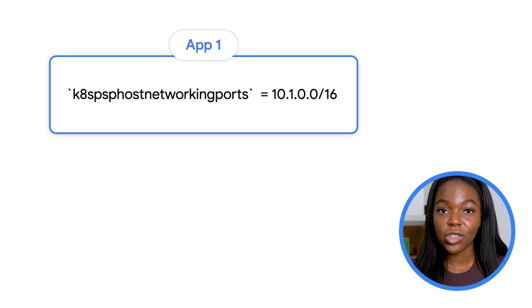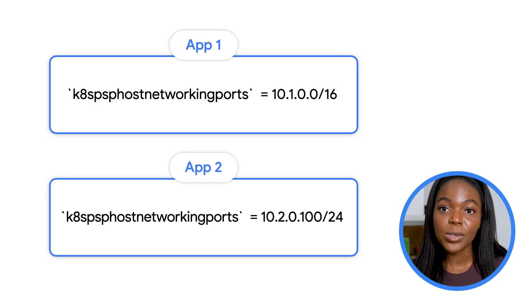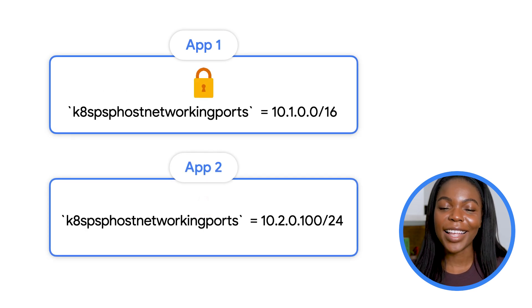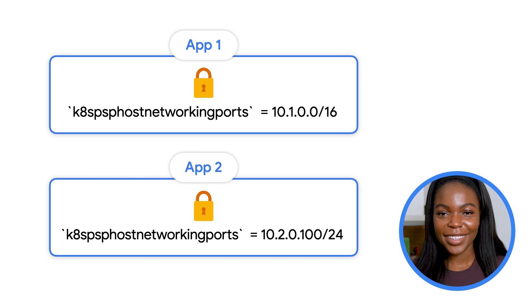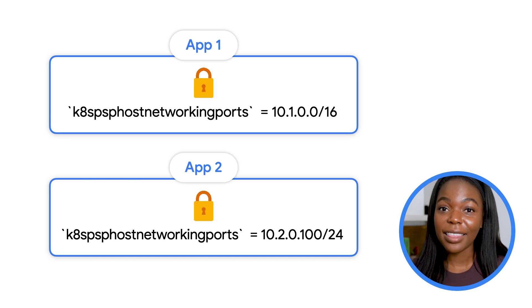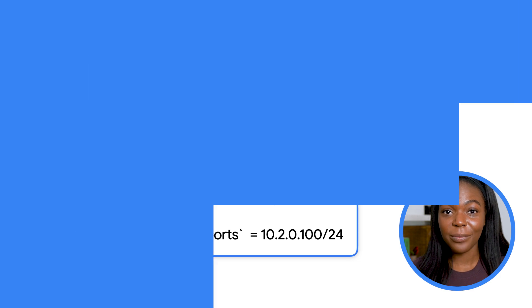So, for example, if you have a family of applications that will have to use a limited range of ports, you can define a template to limit the range but define that range with a constraint at implementation time.